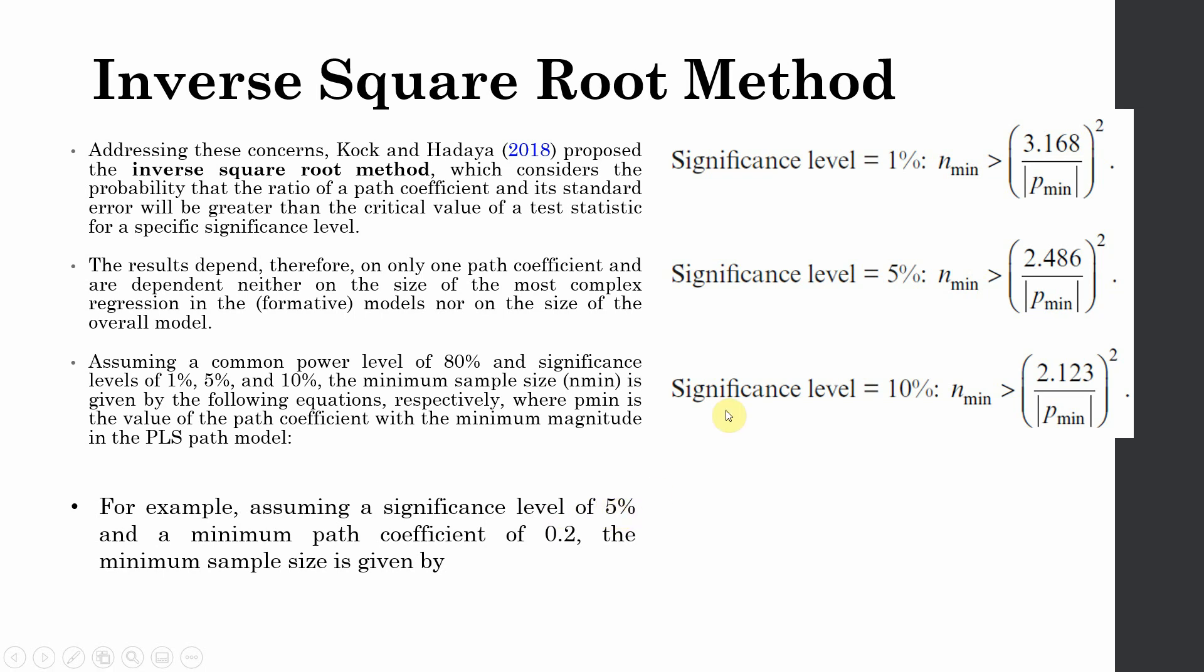For example, let's say our significance level is 5% and the minimum path coefficient is 0.20. Then the minimum sample size should be 154: 2.486 divided by 0.2. The result needs to be rounded off to the next integer, that is 155.